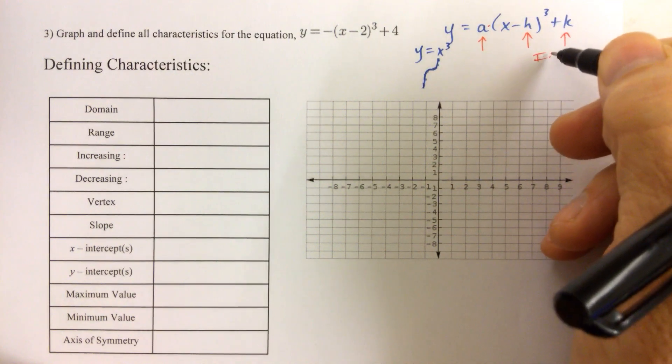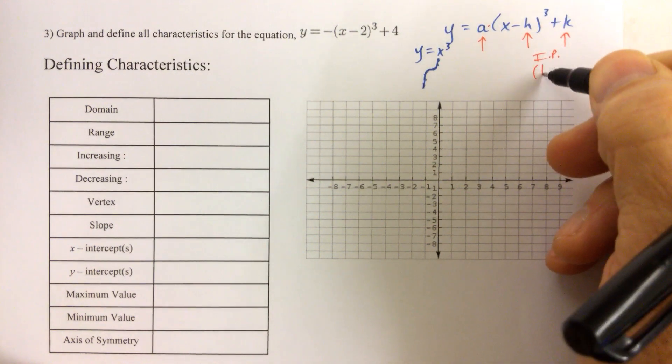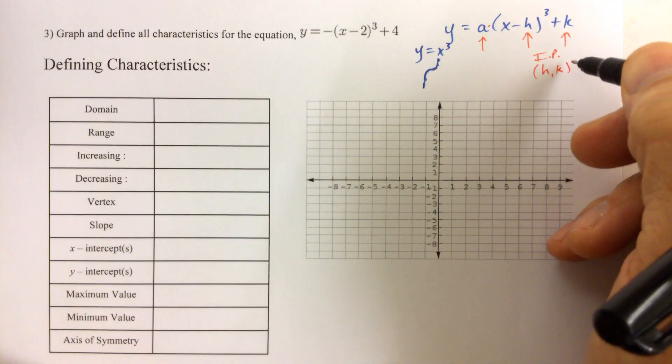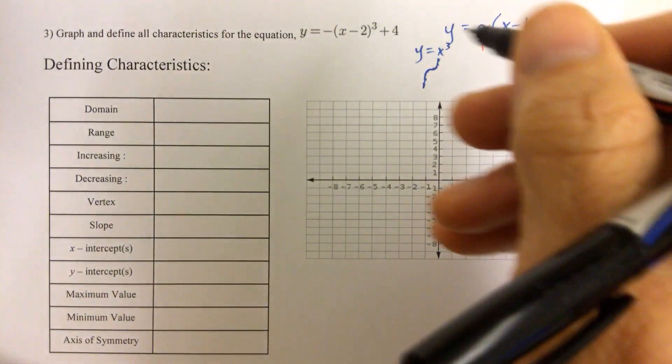The hk is the inflection point. The inflection point has coordinates hk, and the a value is that number right out in front.